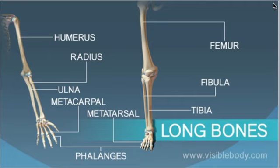Long bones' functions are to support the weight of the body and facilitate movement. Long bones are mostly located in the appendicular skeleton and include bones in the lower limbs, like the tibia, fibula, metatarsals, and phalanges.